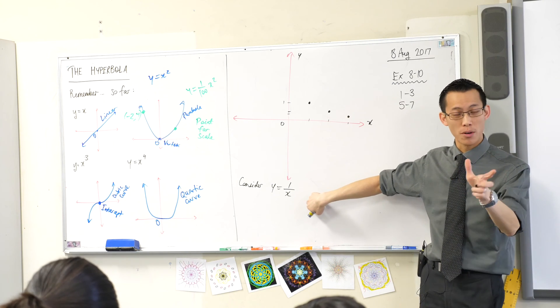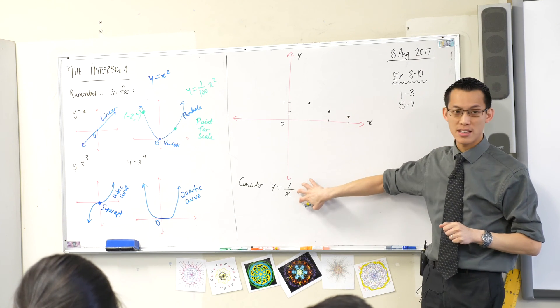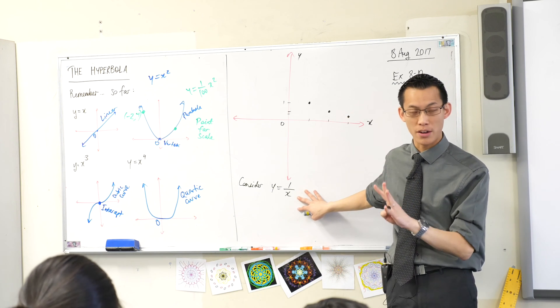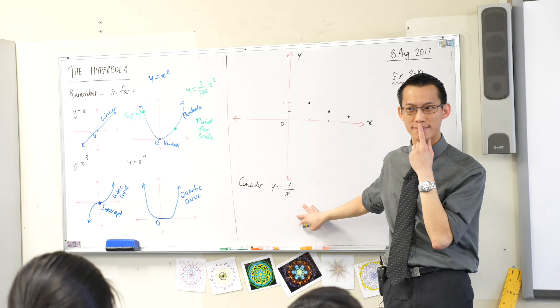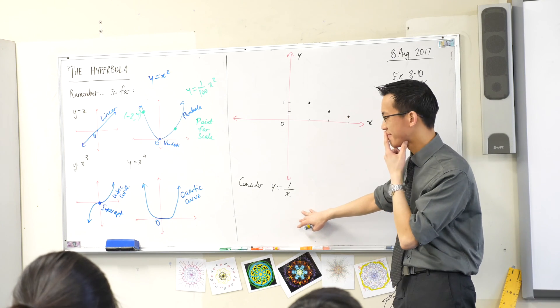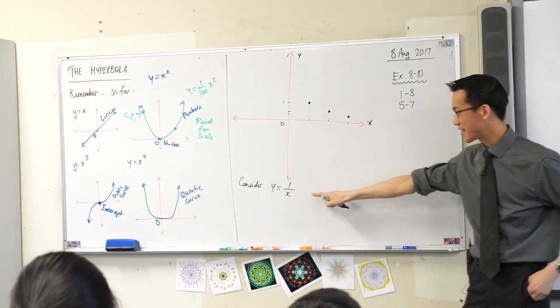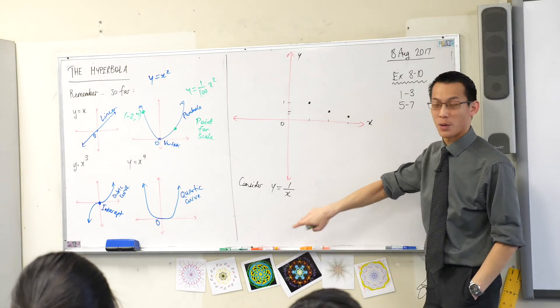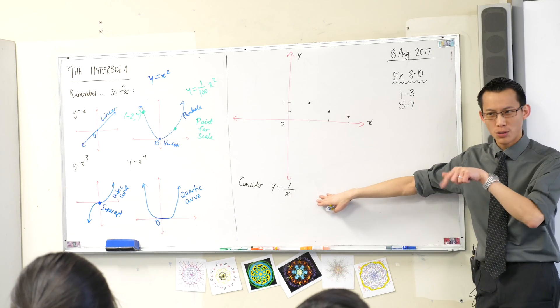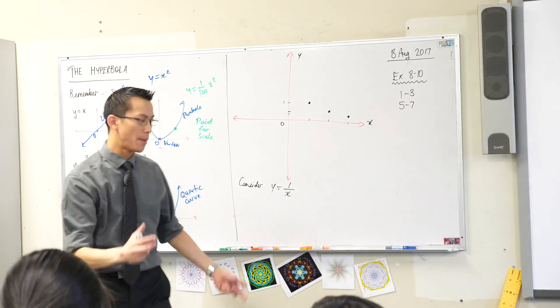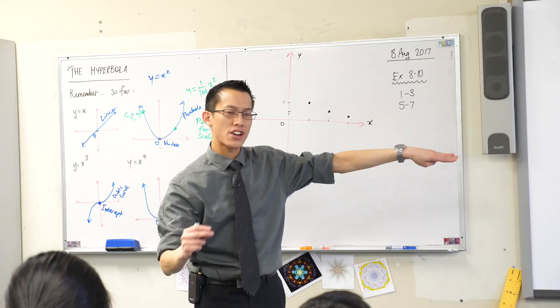So have a look, Year 10. Focus - this is a really important point, especially for those of you considering 2-unit or other courses next year. No matter how big you make x, you could make this a million, a billion, a googol - whatever large number you choose. No matter how big you make that number, one over that will never be zero.